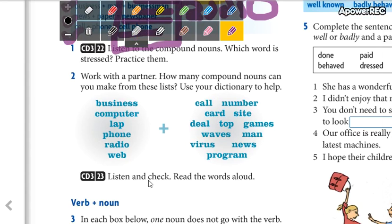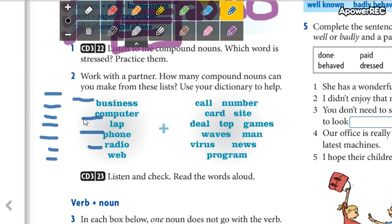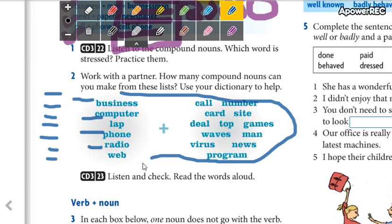And here, in this part, you are going to make compound nouns from these lists that you have. You can write your compound nouns here. There are more than six. At least six. Obviamente. Chequen bien.